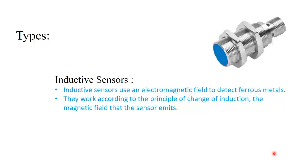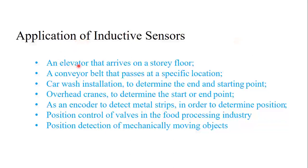In the image you can see the inductive proximity sensor type. Inductive sensors are widely used in elevator systems to detect storage floors. They are also used in conveyor belt operations to check for specific locations, in car wash installations to determine starting and ending points, and in overhead cranes to determine start and end points.